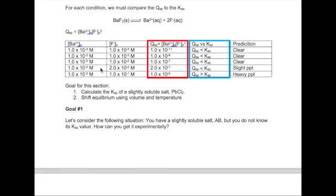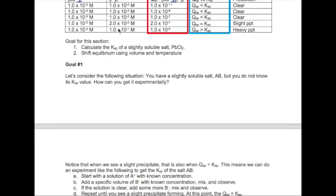So if you go through the table, you can see that when we add 2 times 10 to the minus 2 molar fluoride ions, we just made our Qsp roughly about the same as the Ksp. So we should see a small amount of precipitate forming. If we increase the fluoride after that, we get a much heavier precipitate forming.